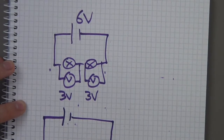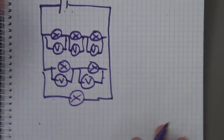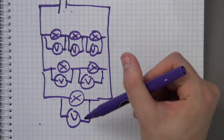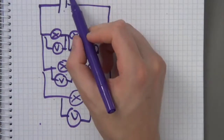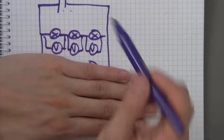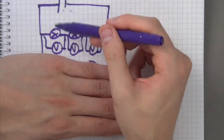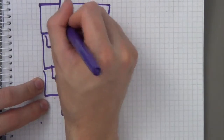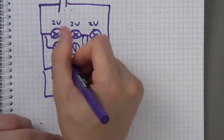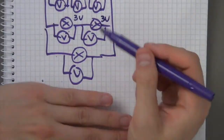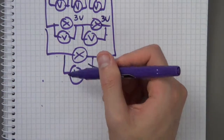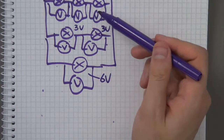Another example: three bulbs with voltmeters. If the supply is six volts, in the series section with three equal bulbs it's two volts, two volts, two volts. For the branch with two bulbs it's three volts and three volts. And for the branch with just one lamp, that single lamp gets the full six volts.